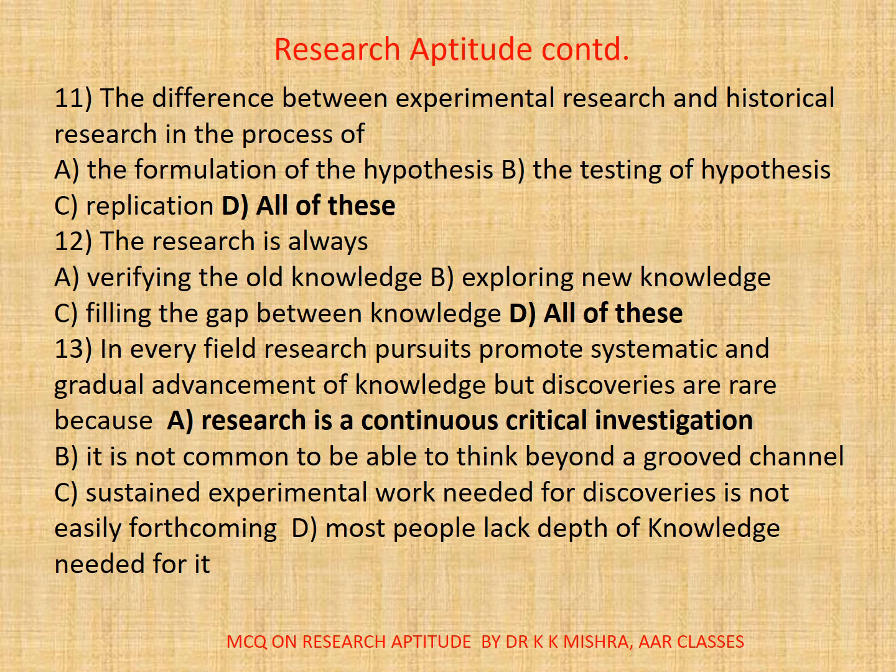Question eleven: The difference between experimental research and historical research is the process of A: The formulation of the hypothesis. B: The testing of hypothesis. C: Replication. D: All. The correct option is D: All.